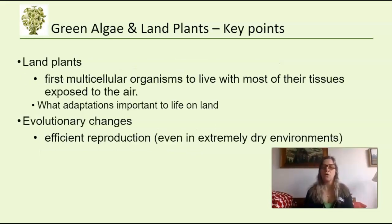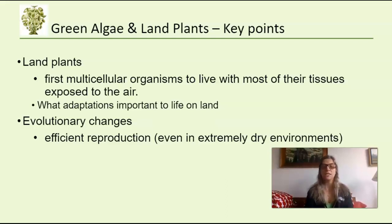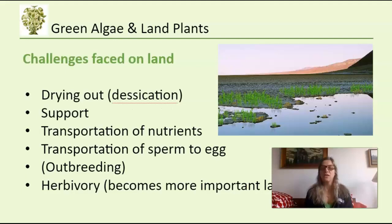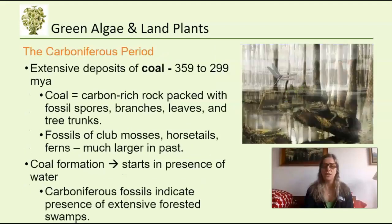We'll talk about how land plants were the first multicellular organisms to live with most of their tissues exposed to land, as opposed to algae. There are major evolutionary challenges, including efficient reproduction when sperm cannot easily swim to the egg. Key obstacles include drying out or desiccation, transportation of nutrients now that they're no longer bathed in them, transportation of sperm to egg, and herbivory.